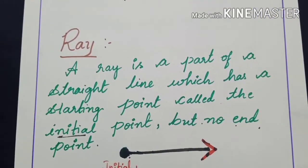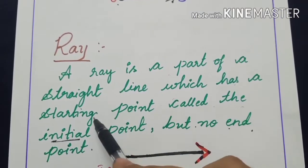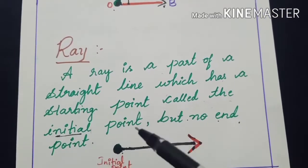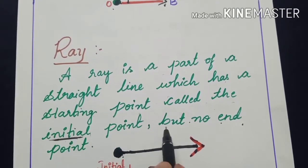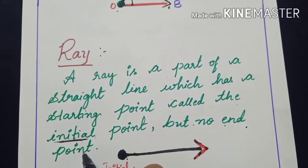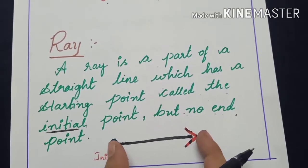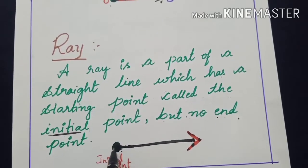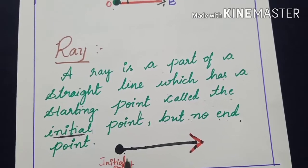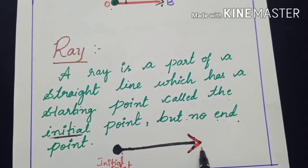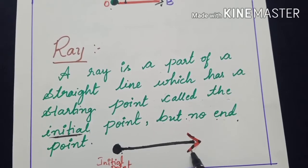Let us recall the definition of ray. A ray is a part of a straight line which has a starting point called the initial point. Starting point is nothing but initial point, but no end point. Look at the definition carefully. A ray is a part of the straight line which has the starting point, and the starting point is also called as initial point. This arrow mark indicates that there is no end to this side.